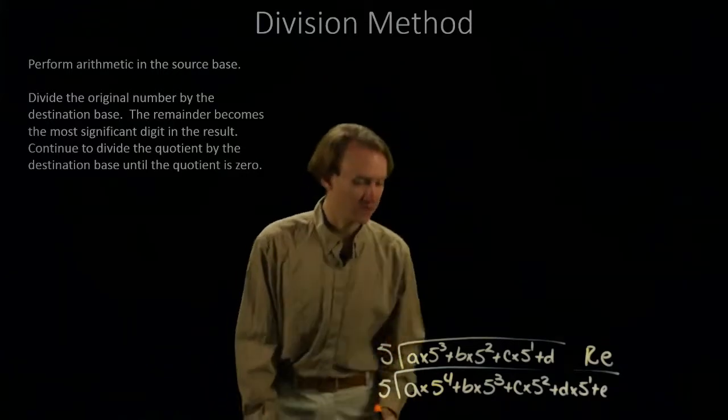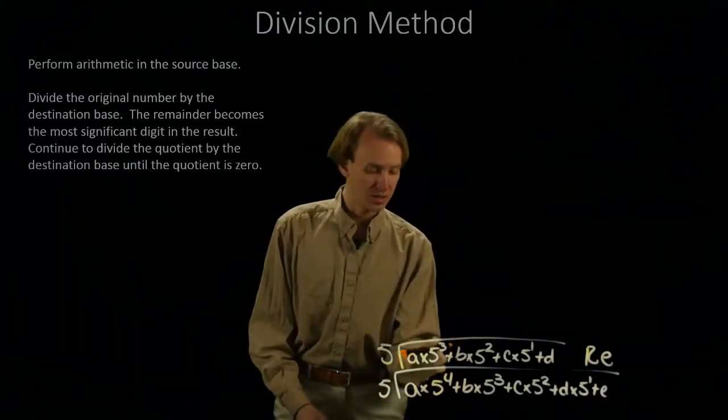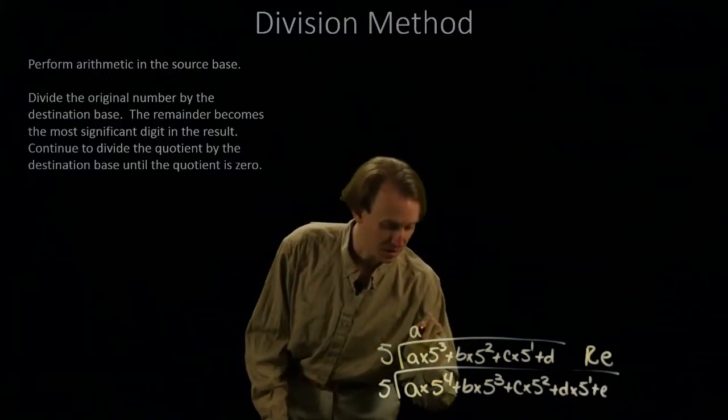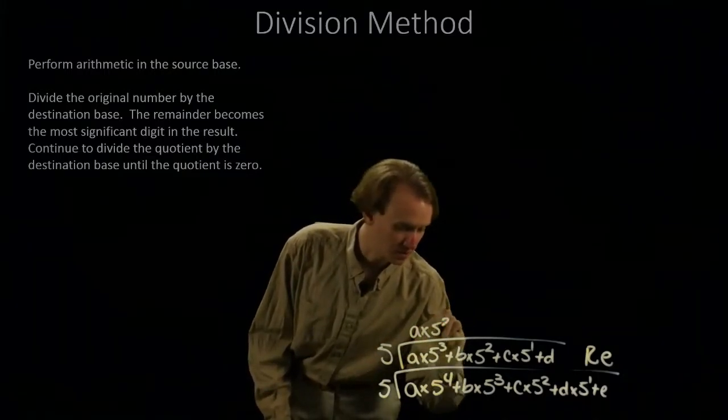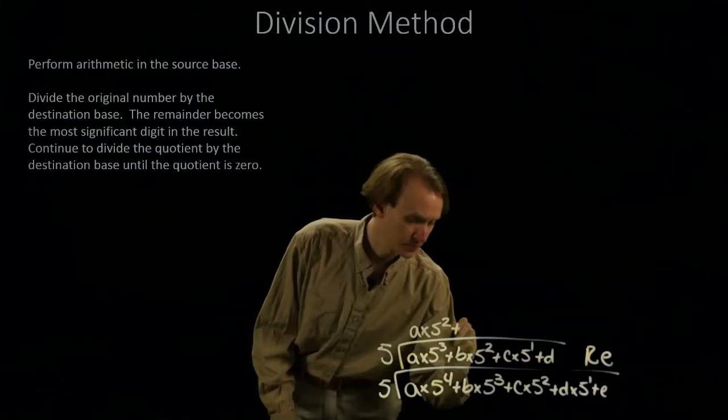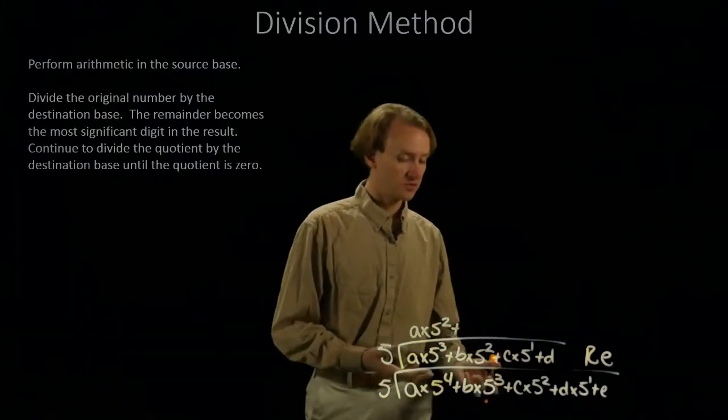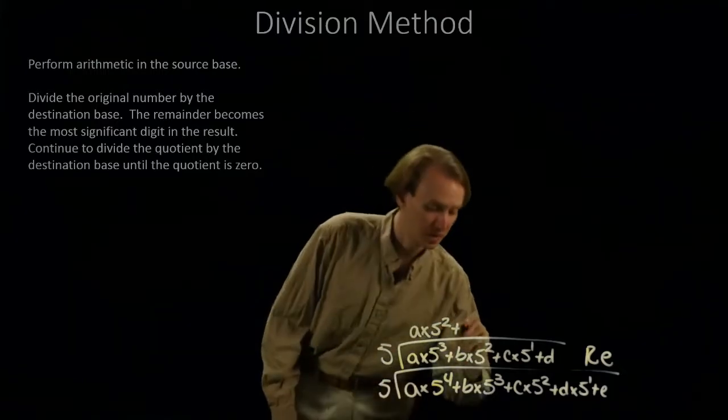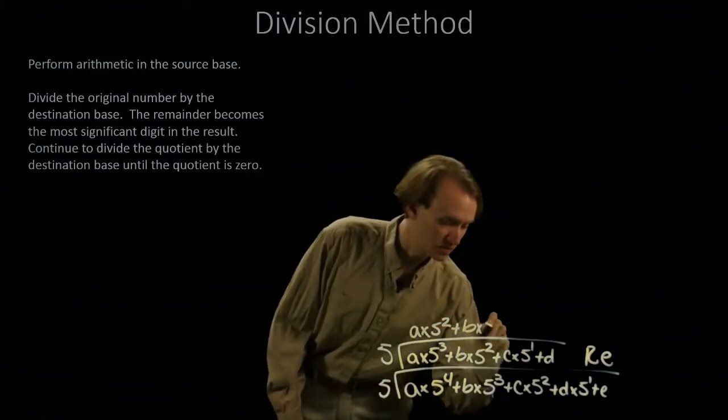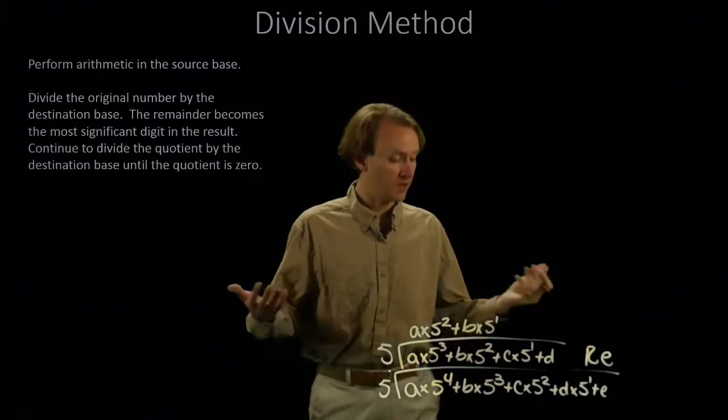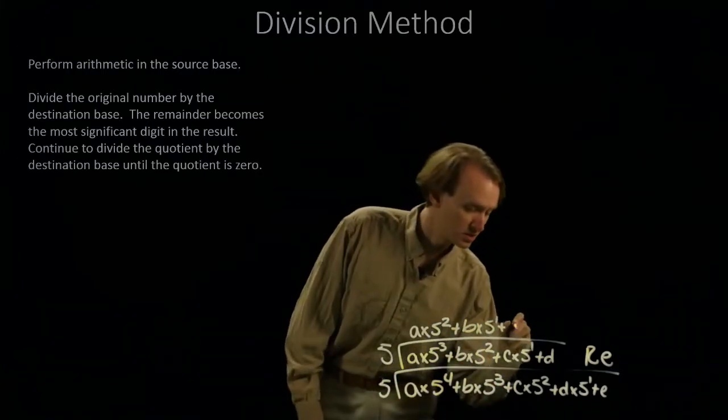So, I'll divide this by 5. So, a times 5 cubed divided by 5 gives me a times 5 squared. I have this term, b times 5 squared divided by 5 will give me b times 5 to the 1st. c times 5 to the 1st divided by 5 is just c.